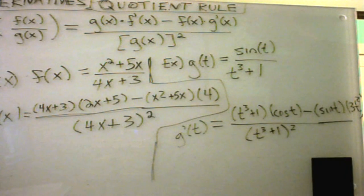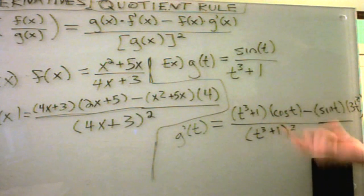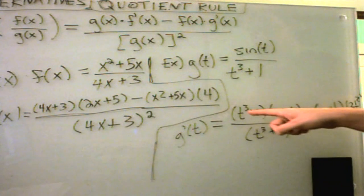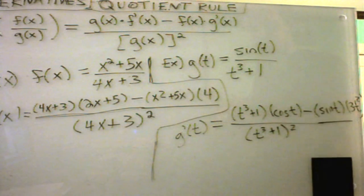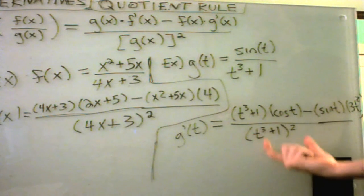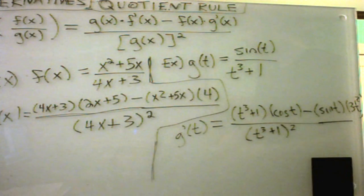So, just like before, if you wanted to simplify this part down, you could distribute out the cosine of t to the t cubed term, the cosine of t to the plus 1 term. You could distribute the 3t squared over here. And you could square the bottom term, remembering just to foil this out. So, here's a basic illustration of the quotient rule.